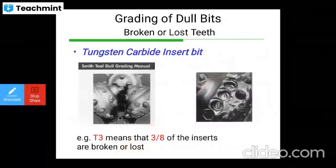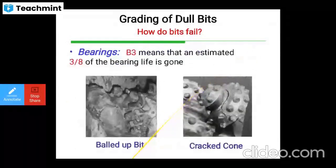For tungsten carbide inserts, T3 means 3/8 of the inserts are broken or lost, as shown in the diagram. B3 means an estimated 3/8 of the bearing life is gone. Other failure types include balled-up bits and cracked cone bits. This is the grading of dull bits.